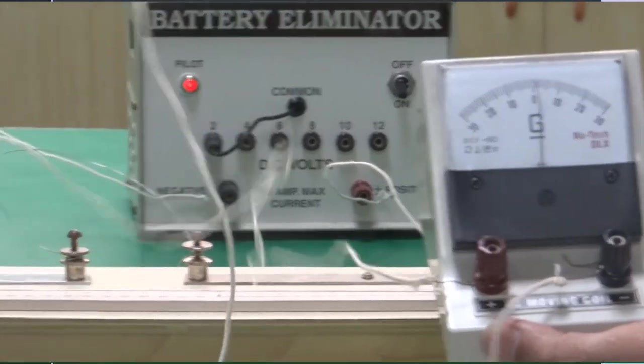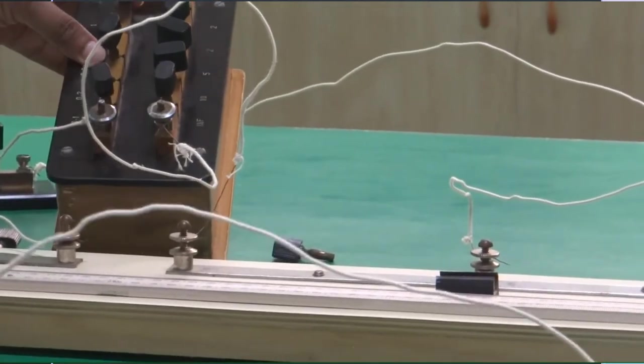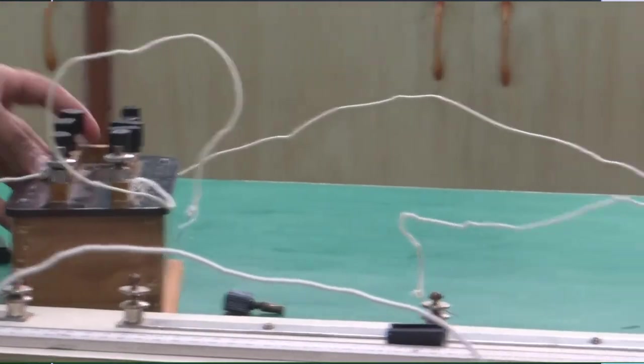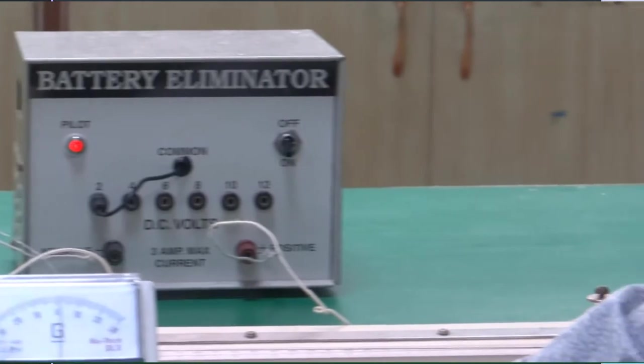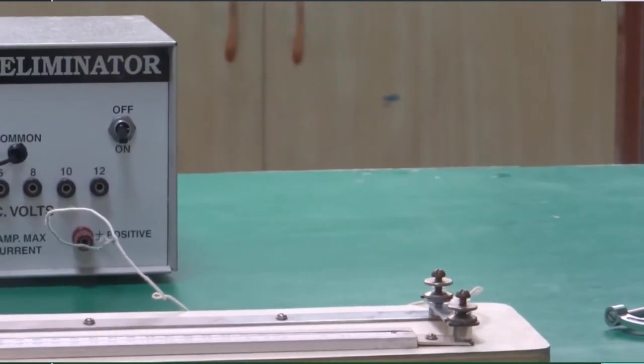Similarly you will take four or five readings from this. Take different values of the known resistance. And then we will see in the observation table how we will determine the value of this unknown resistor.